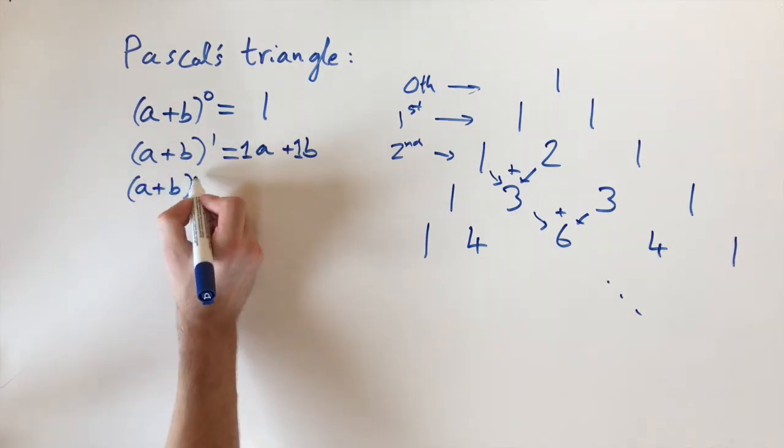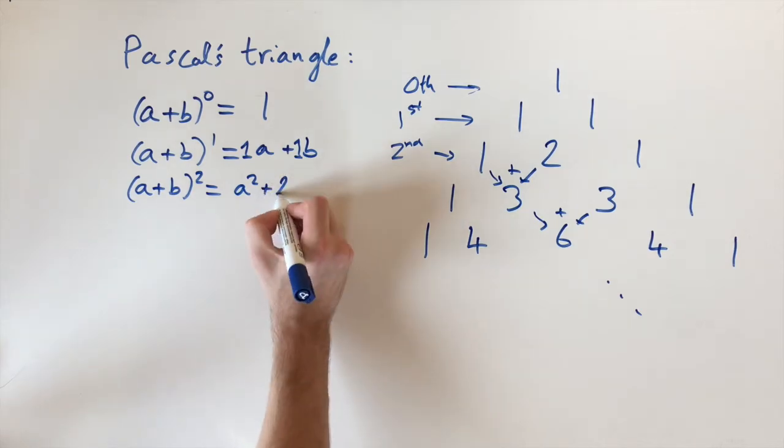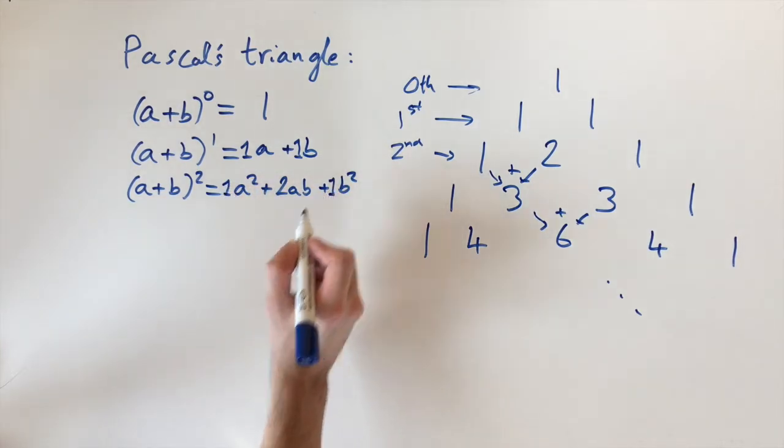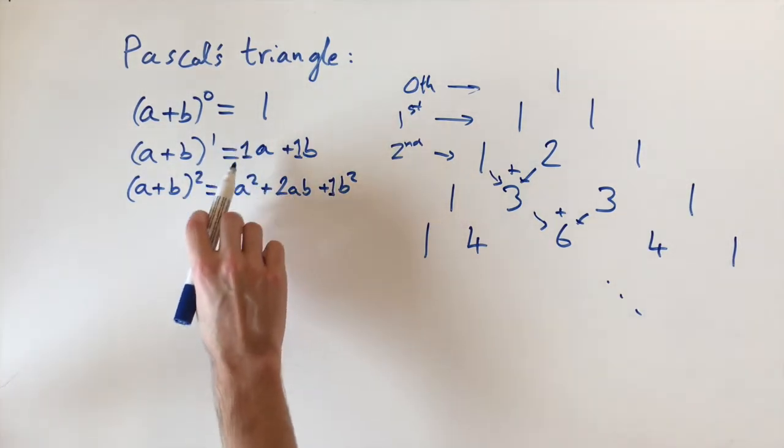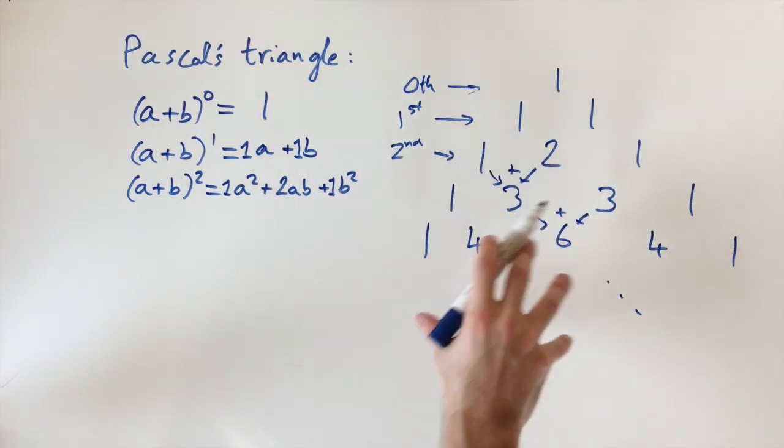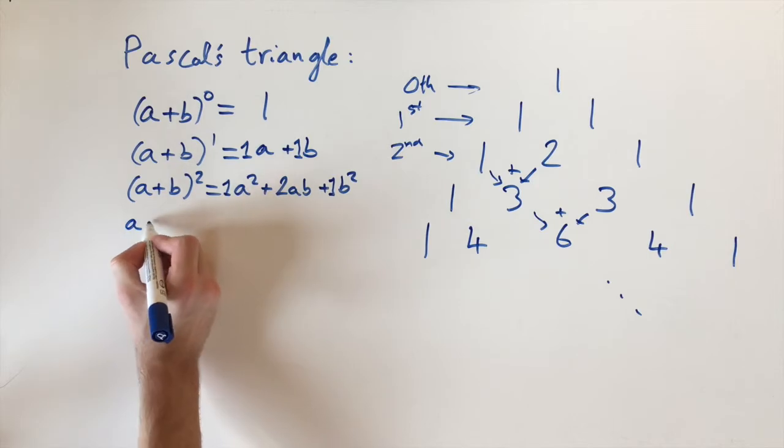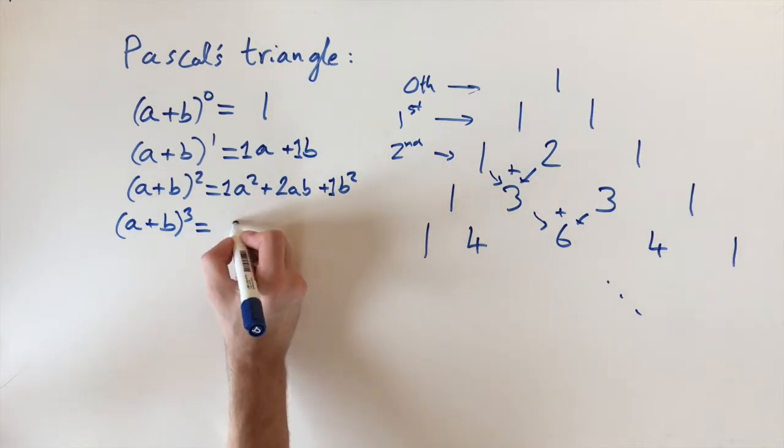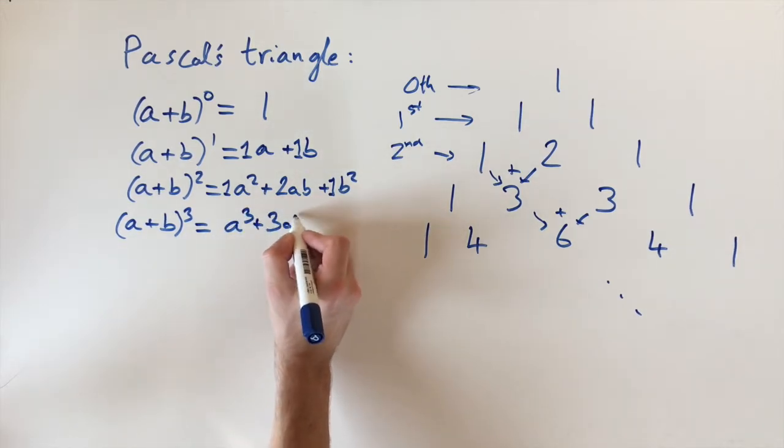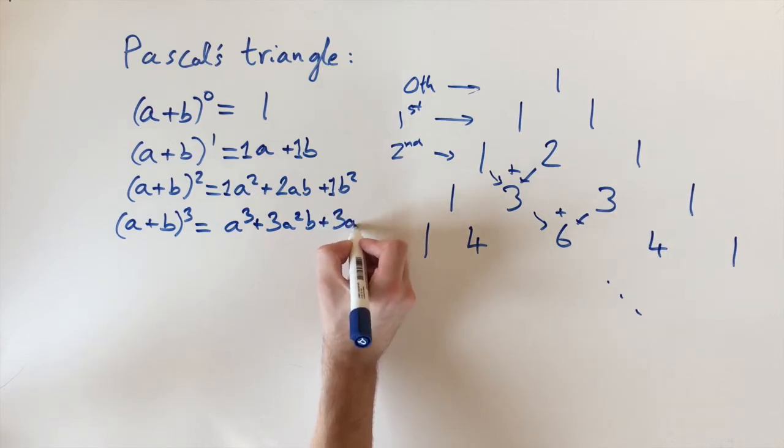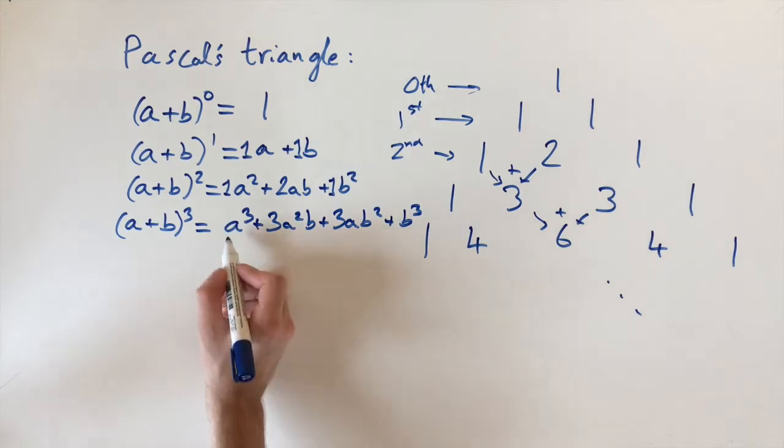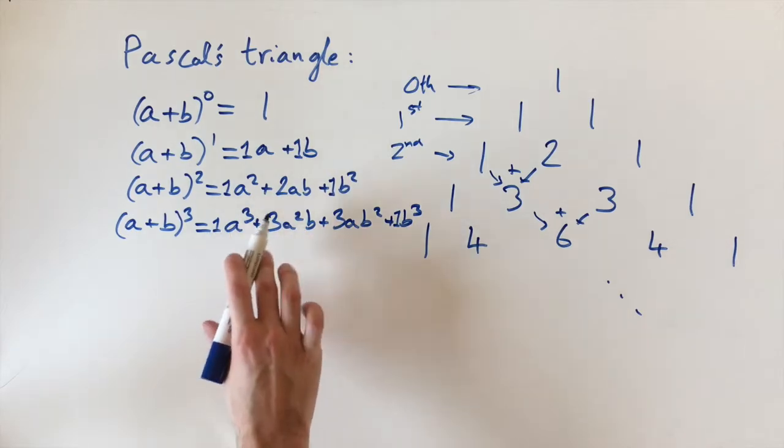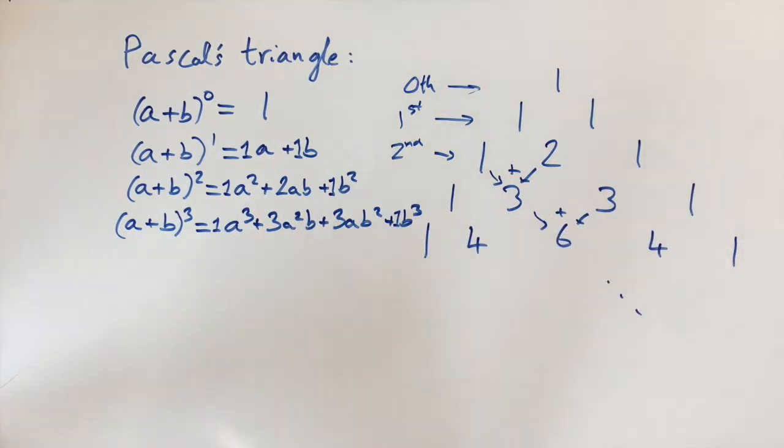Let's carry on: (a+b)² is a² + 2ab + b². You can imagine these ones in here, so 1, 2, 1. Maybe you can start seeing the pattern, but we have 1, 1, then 1, 2, 1, which are exactly these numbers in Pascal's triangle. Let's do the next one: (a+b)³. You can check the algebra, but this comes out to be a³ + 3a²b + 3ab² + b³. Again, you can put these imaginary ones in here, so 1a³, 1b³, and these numbers 1, 3, 3, 1 are the third row.